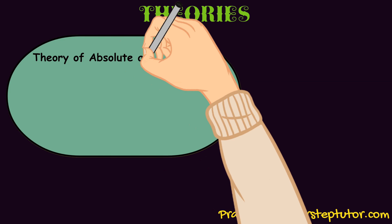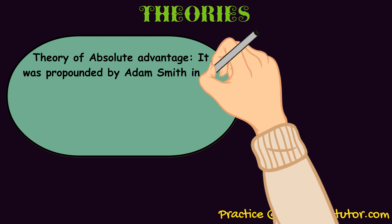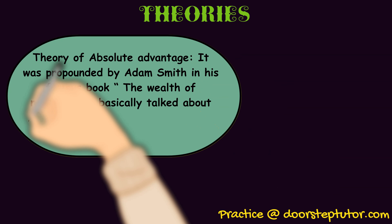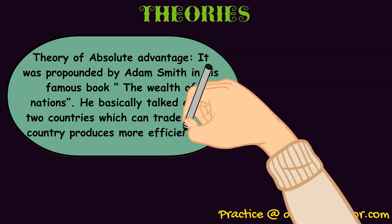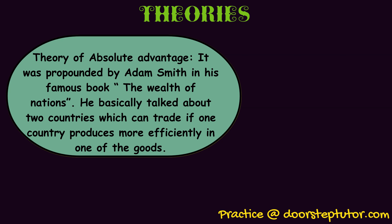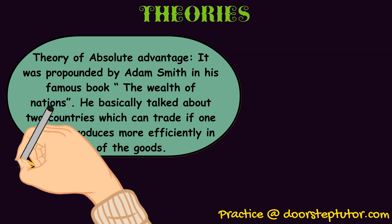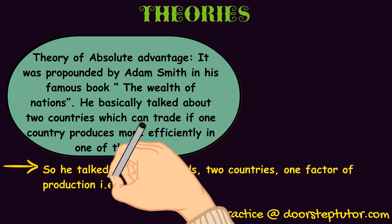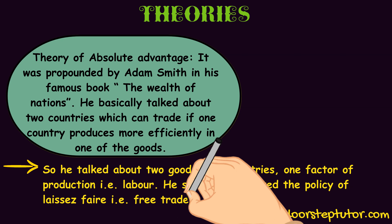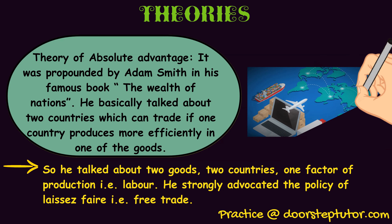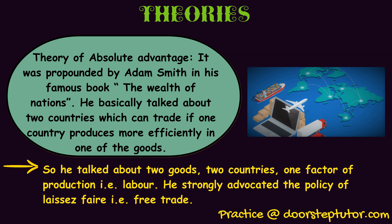The next theory is the theory of absolute advantage, propounded by Adam Smith in his famous book The Wealth of Nations. He talked about two countries which can trade if one country produces more efficiently in one of the goods. He talked about two nations, two goods, and one factor of production — labor.